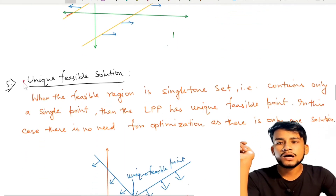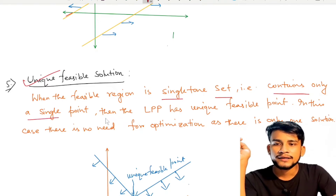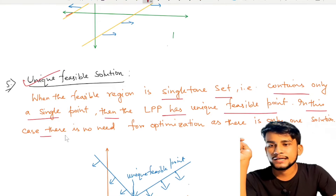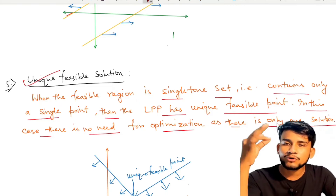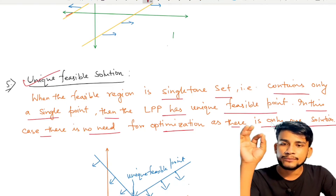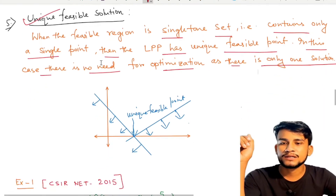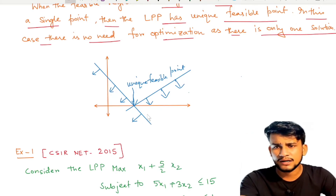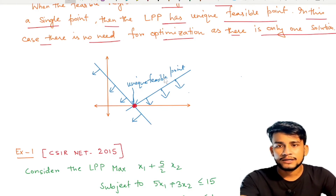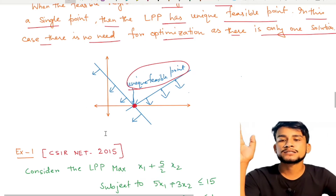Case 5 is unique feasible solution. When the feasible region is a singleton set — that is, it contains only a single point — the LPP has a unique feasible point. In this case there is no need for optimization, since we get only one point. That single point is the required solution, and it optimizes the objective function.